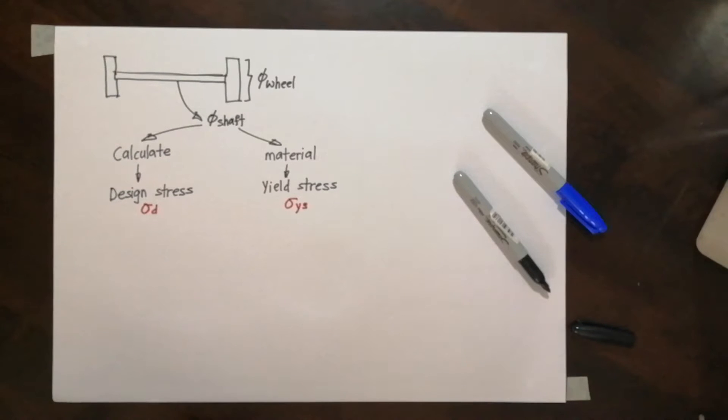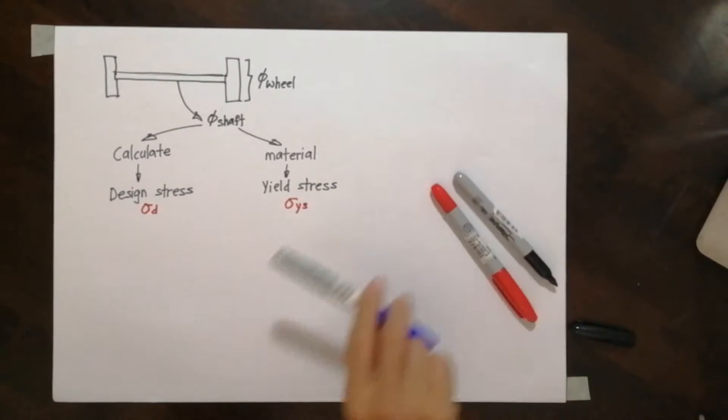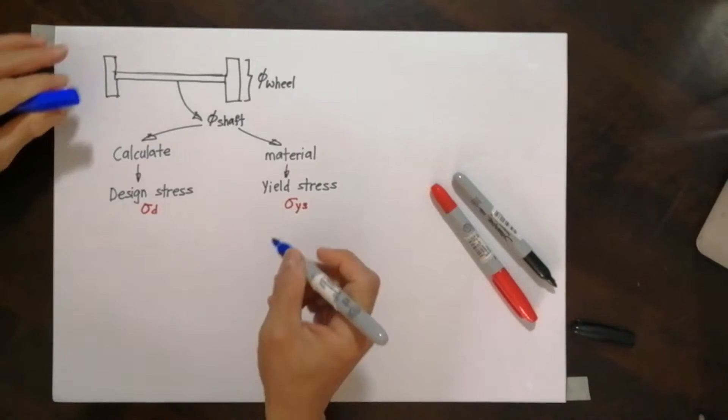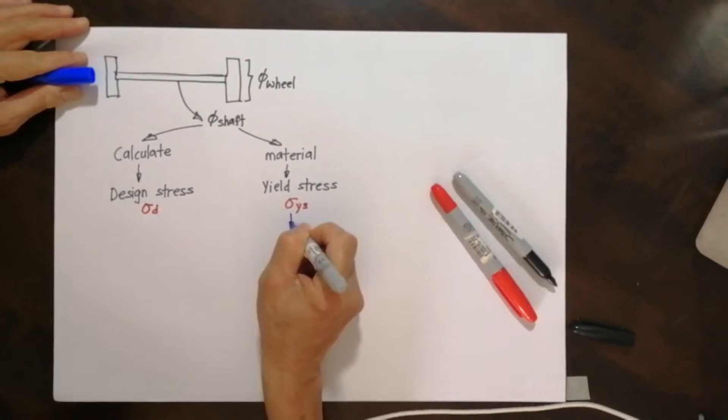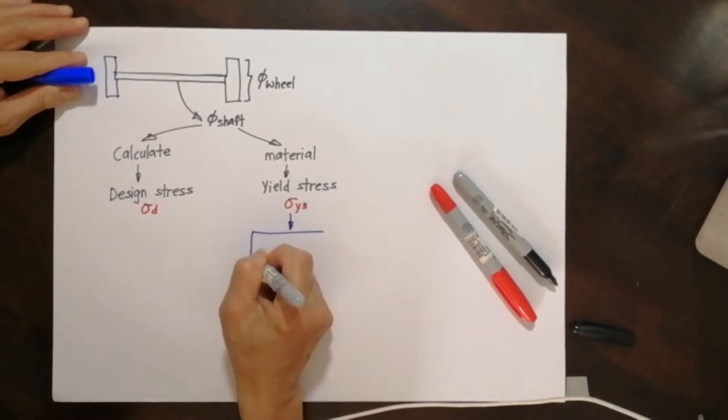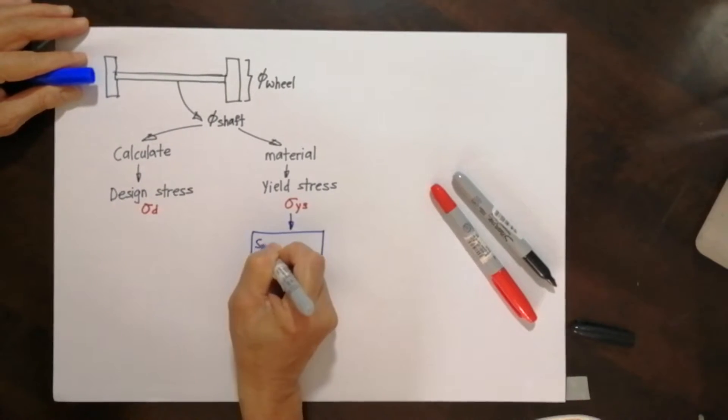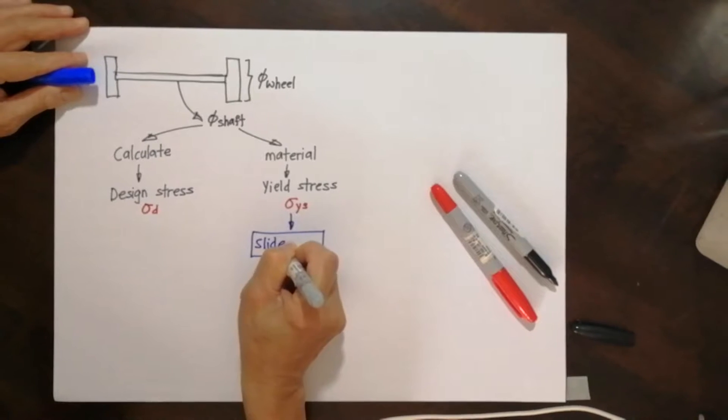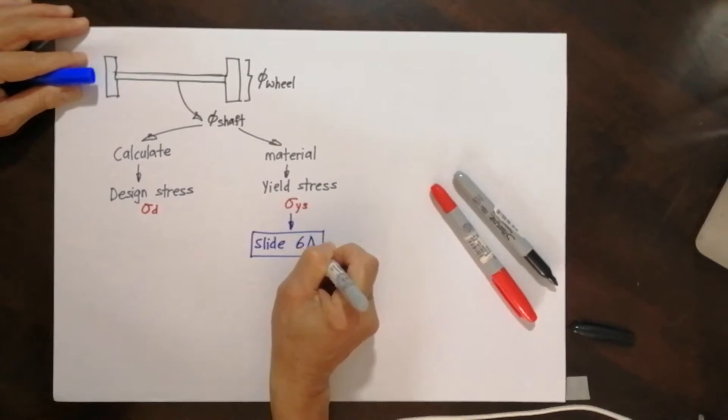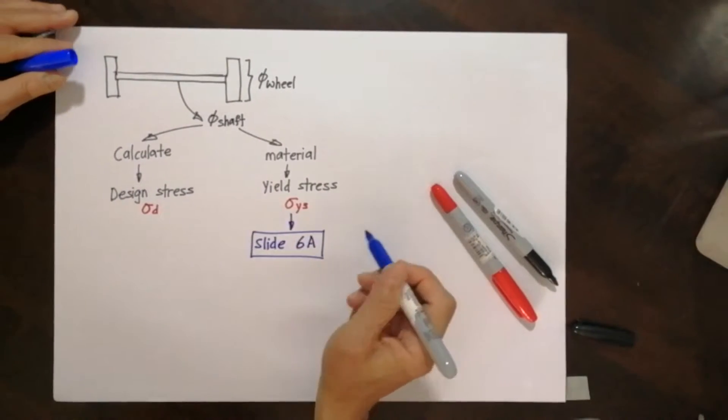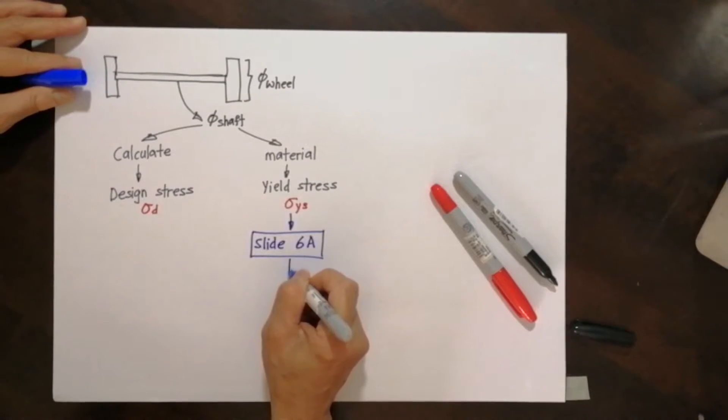Now how are these two related? Let's understand yield stress first. Yield stress, please refer to your slides, refer to your slide 6A. Assume the material we use is aluminum.